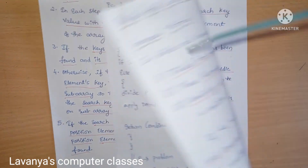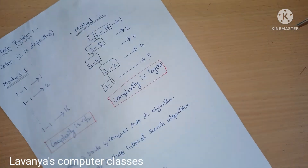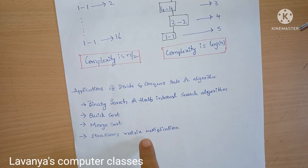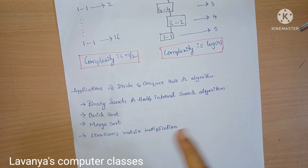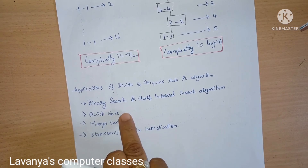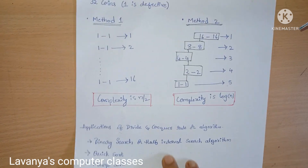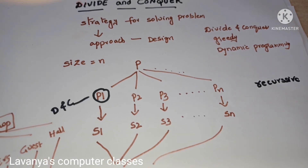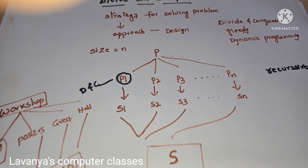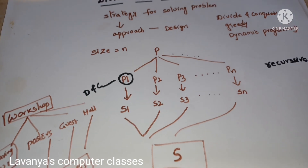In this method, we have many applications: binary search, quick sort, merge sort, and Strassen's matrix multiplication. In the next videos, I will explain each of these in detail. Thank you for watching my video. If you like this video, please subscribe to my channel and share it with your friends. In the next two videos, I will explain the applications of divide and conquer method. Thank you.